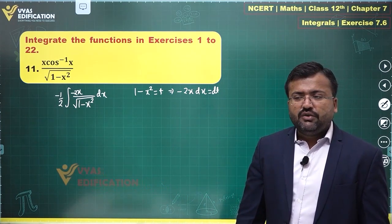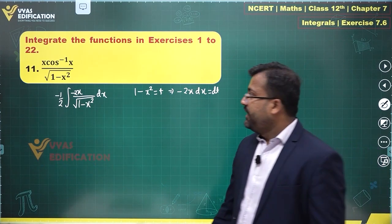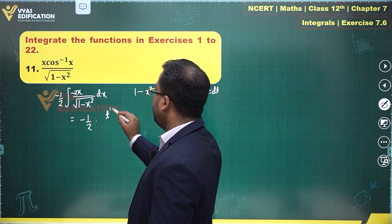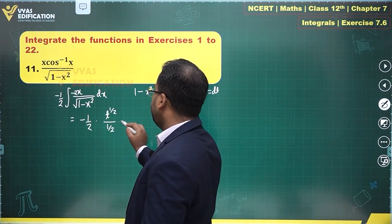So t power minus 1 by 2, the integral will be t power 1 by 2 upon 1 by 2. Minus 1 by 2 is okay. The integral will be t power 1 by 2 upon 1 by 2 plus constant.